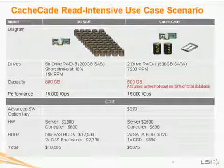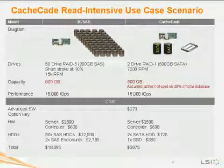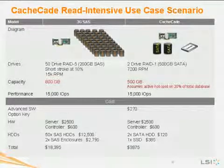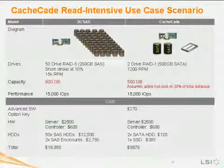In order to attain that 15,000 IOPS benchmark, you'd need to employ approximately 50 hard disk drives, still short-stroked to 10%, giving you about 800 gigabytes of storage capacity. The cost differentiation is much more dramatic — over $18,000 for this configuration, which includes the drives, two enclosures to contain all the drives, plus the rest of the server hardware.